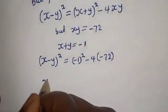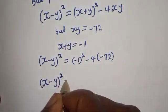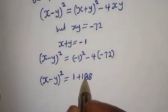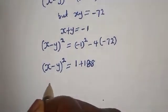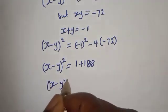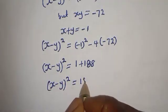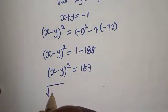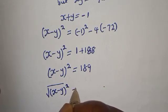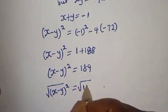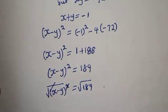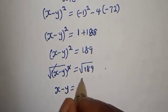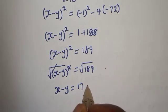So (x minus y) squared equals 1 plus 288, which is 289. Taking the square root of both sides, x minus y equals the square root of 289, which is 17. Let's call this equation 6.